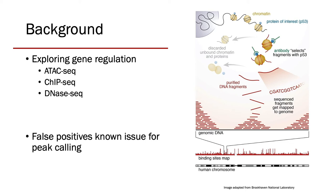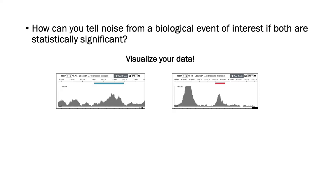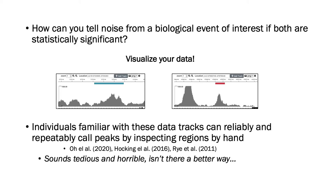There are techniques to mitigate this — FDR, IDR — they can remove some false positives, and running multiple replicates for experiments helps too. But these solutions aren't perfect and work better in some situations than others. So, how can you tell noise from a biological event if they're both statistically significant? Well, you have to visualize your data. The two peaks shown here come from the same track, are shown at the same scale, and have the exact same p-value. But to my eye, the peak on the right looks much better. In fact, several studies have shown that humans are good at calling peaks by sight, and can do so reliably and repeatably.